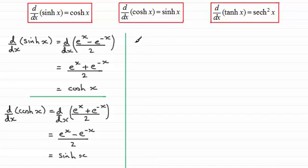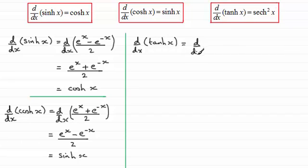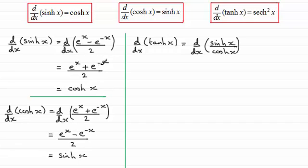Next we come to differentiating tanh(x) with respect to x. If you'd like to have a go at this one, pause the video for a moment. Welcome back. The way I'd like to do this is to think of it as differentiating sinh(x) over cosh(x), because as an identity sinh(x) over cosh(x) is the same as tanh(x). You could also express it using the exponential definitions and apply the quotient rule, but it's a lot easier to use the quotient rule with sinh(x) over cosh(x).